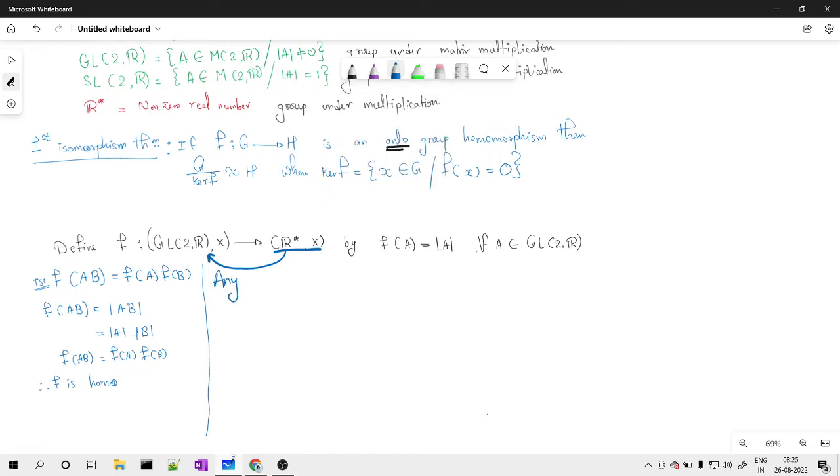I consider any point, for example, say a inside R*, that means it is a non-zero real number. I need to show that there exists a matrix inside my domain, that is the general linear group of order 2 comma R, such that if I apply f on this matrix, I get answer as a.